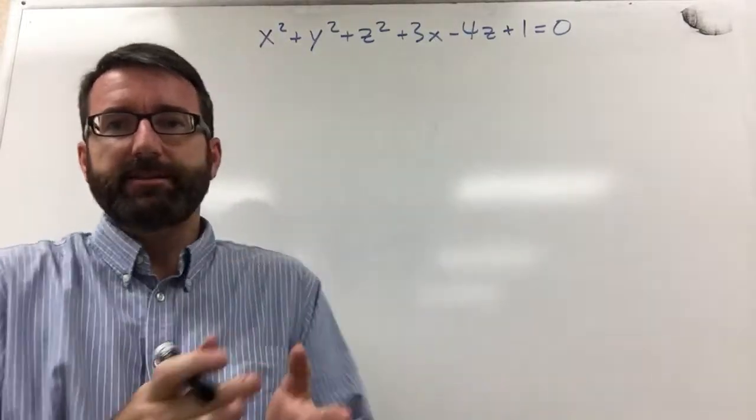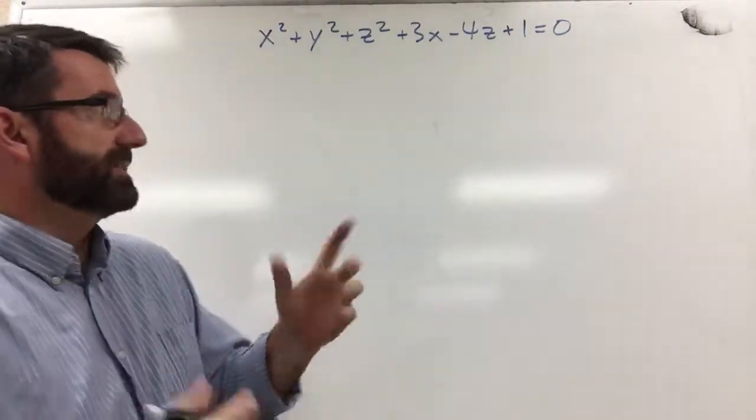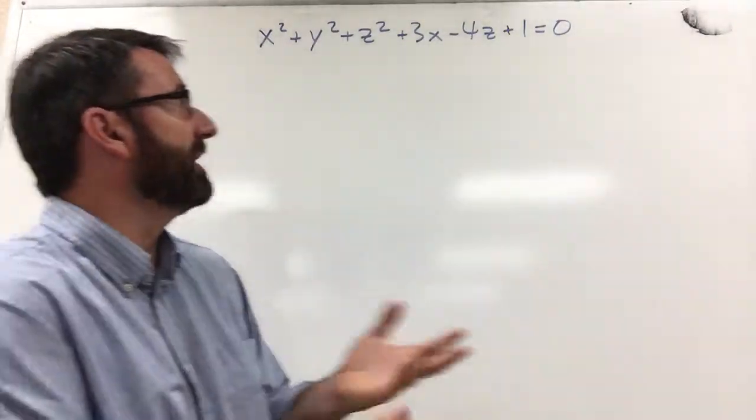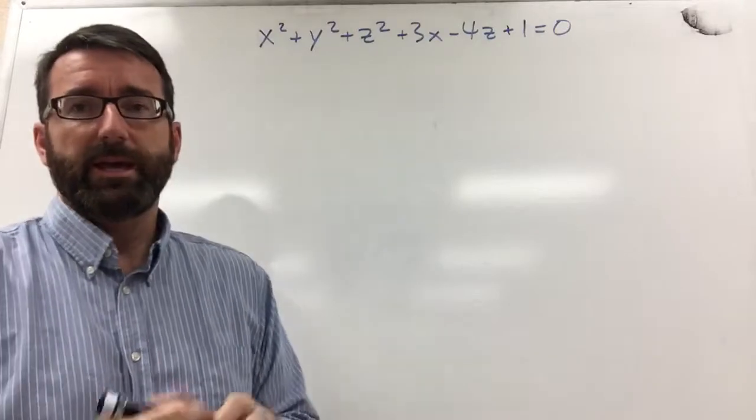We're asked to find the center and radius of the sphere given by this equation: x squared plus y squared plus z squared plus 3x minus 4z plus 1 equals 0.